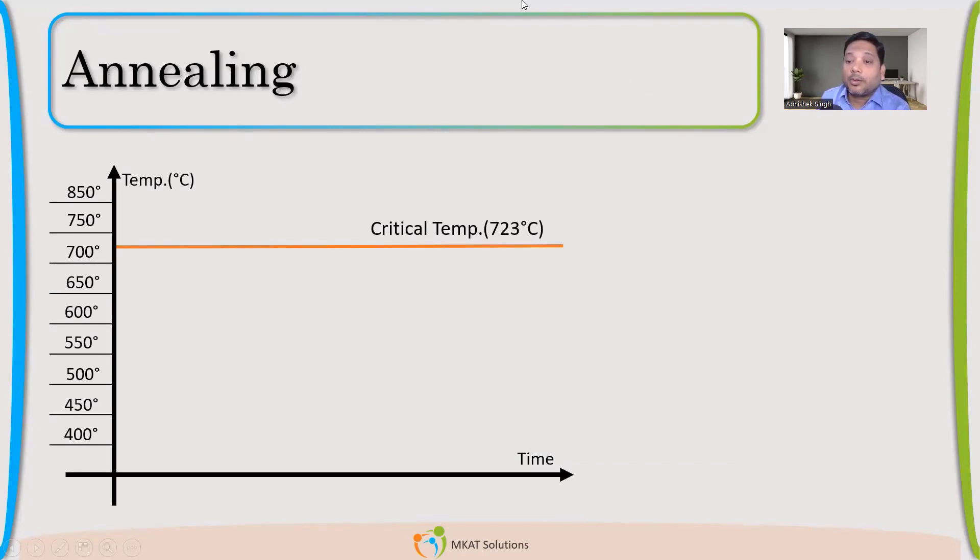So now this is a temperature line. One side you can see, here we have kept temperature. This side time. Now, based on temperature, there is a lower critical temperature and upper critical temperature for a material. If you remember iron carbon diagram, don't worry, we don't go in much detail in the iron carbon diagram. But all these are finally linked to that.